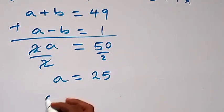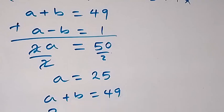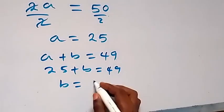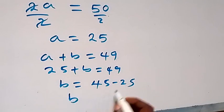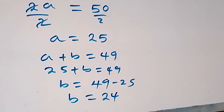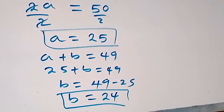To find b, we use the first equation: a + b = 49. Substituting a = 25 gives 25 + b = 49, so b = 49 minus 25, which means b = 24. Therefore a = 25 and b = 24.